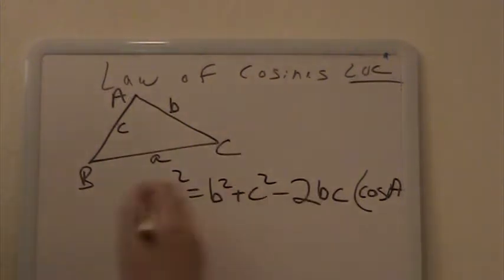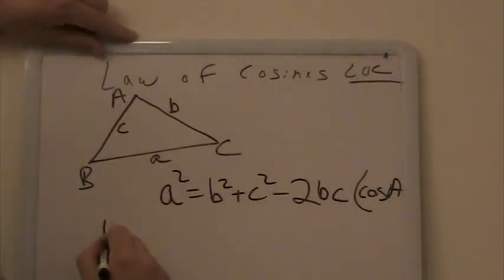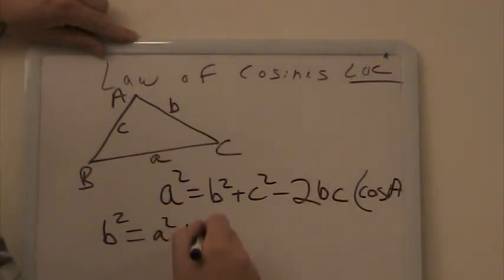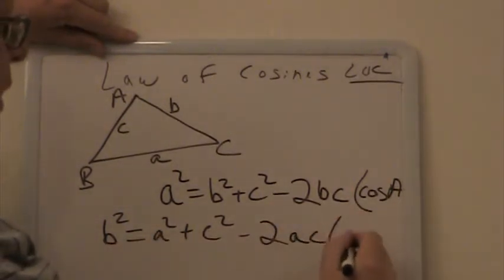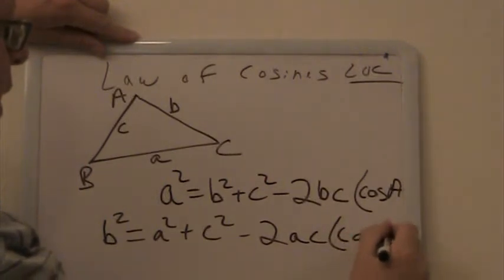We could do it for the other letters too. I'm going to move over here so I have more space. b² then would be equal to the other two sides squared added together, a² plus c² minus 2ac, and then the cosine of angle B.